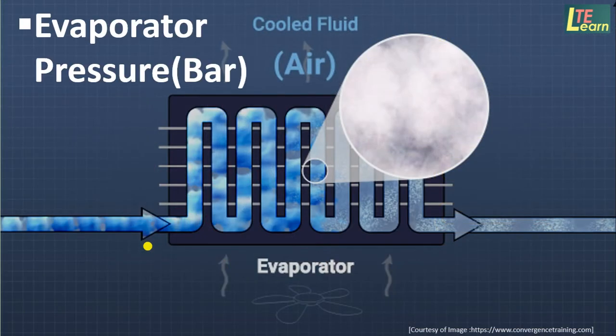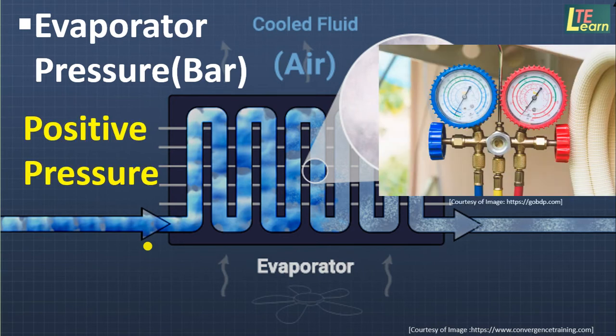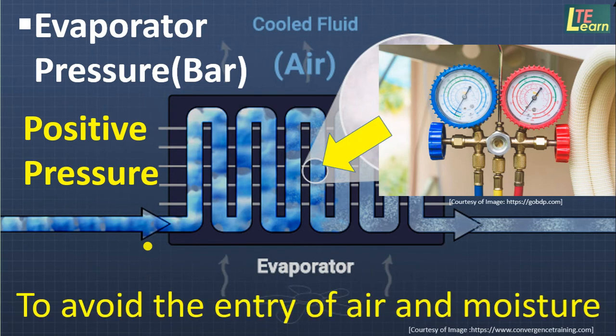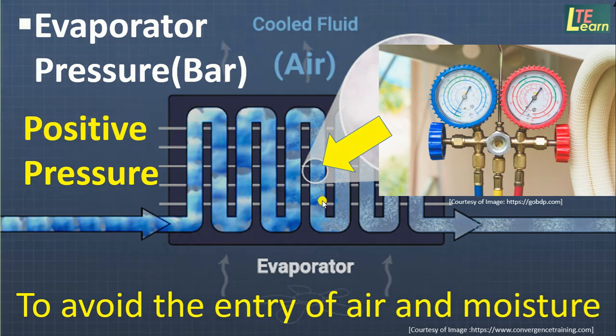At the evaporator, the pressure applied by the vapor should be positive — above atmospheric pressure — in order to avoid the entry of air and moisture inside the cooling coil.